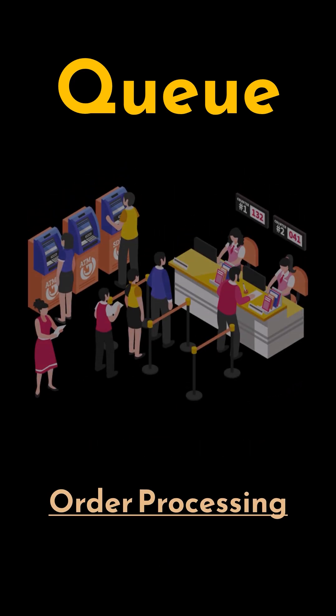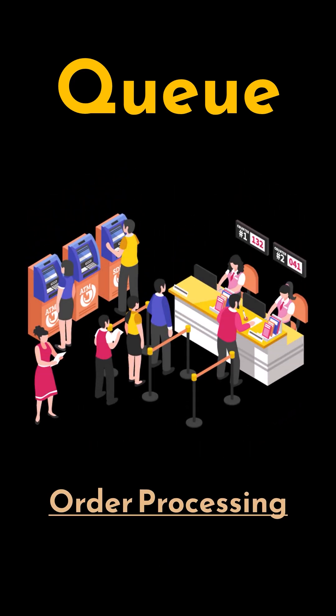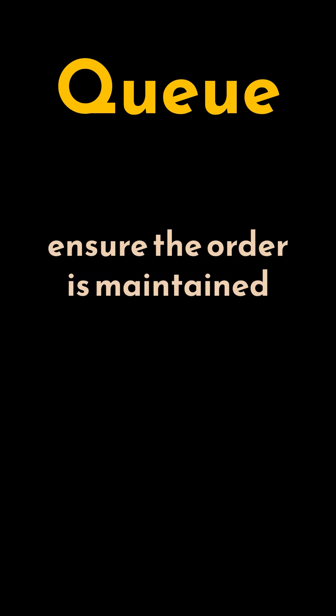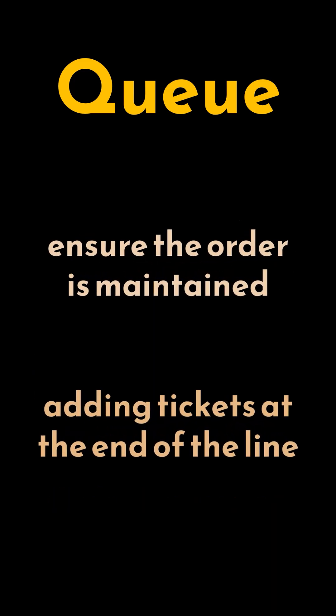For example, if we're processing customer support tickets, the first ticket submitted should be addressed first. We could use a queue to ensure this order is maintained, with each new ticket added at the end of the line.